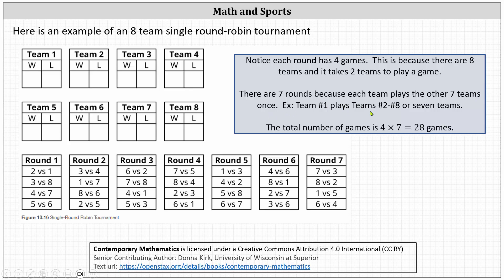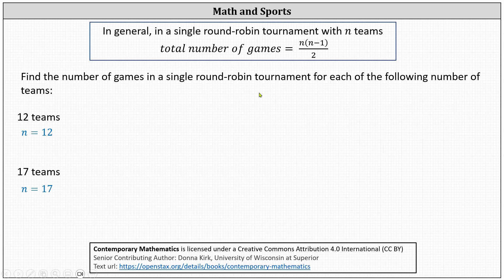For example, team one will play teams two through eight, resulting in seven games. Therefore, the total number of games is four times seven, which equals 28. In general, in a single round robin tournament with n teams, the total number of games is equal to the product of n and n minus one, divided by two.